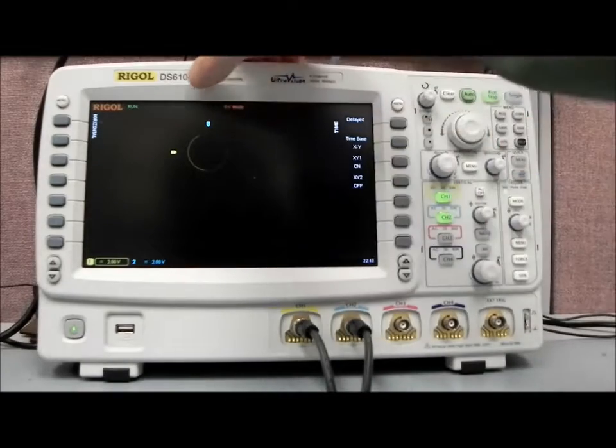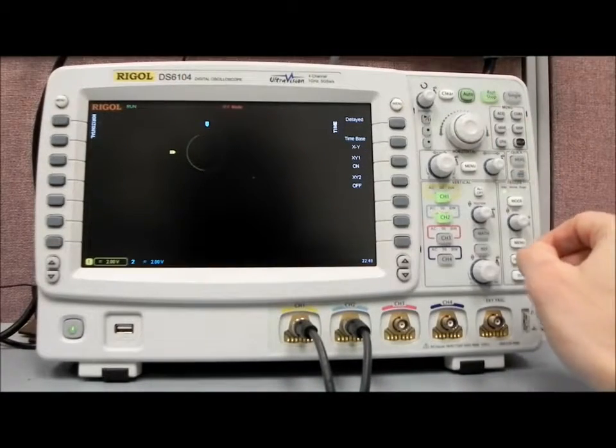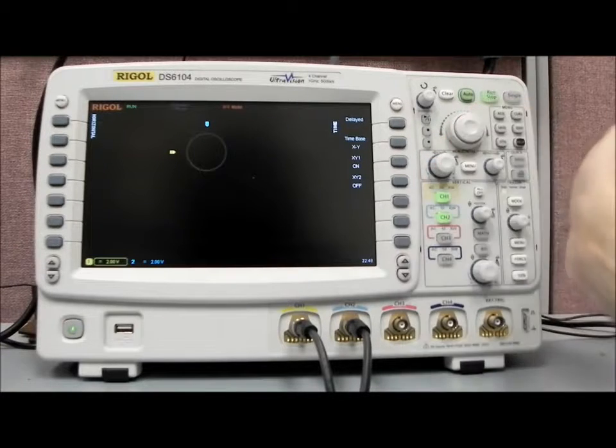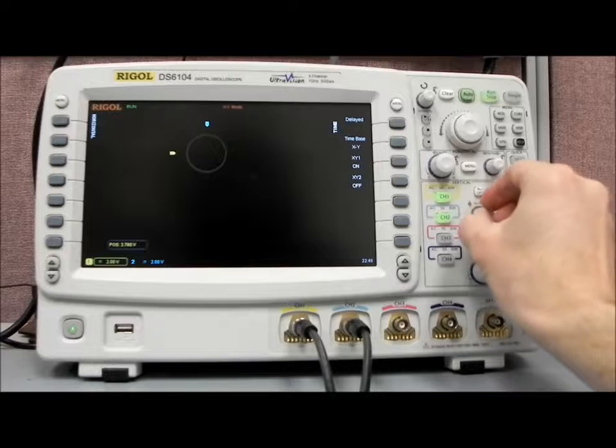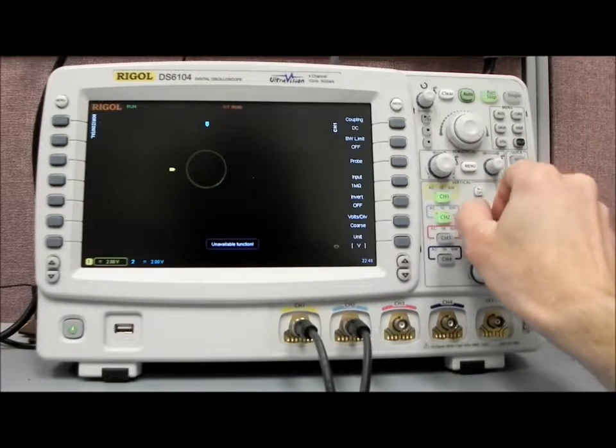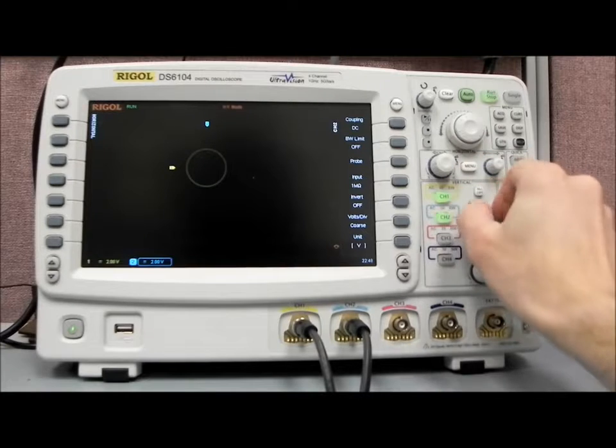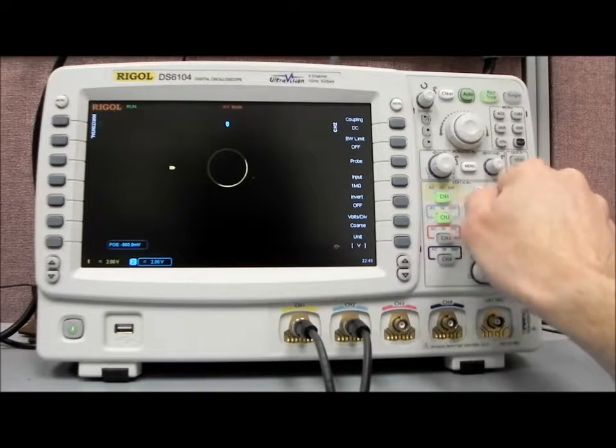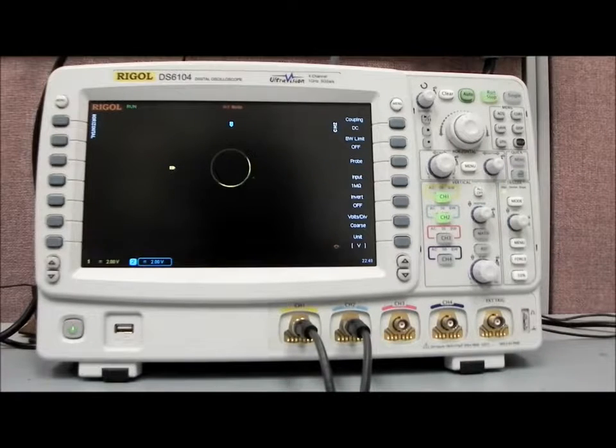Again, the horizontal is going to adjust our sample rate. We have 500 mega samples per second. So we can actually change that. And also we can change the location and I guess we can center it up a little bit. Channel two, remember channel one is going to be one axis, channel two is the other axis. So we can center that up a little bit. And now what we have is that we have a perfect circle because these are 90 degrees out of phase.